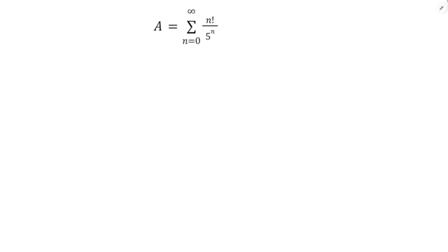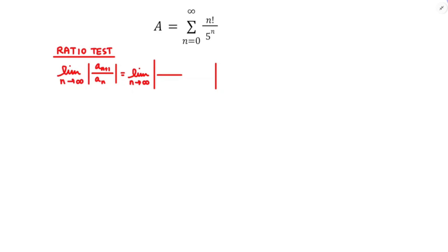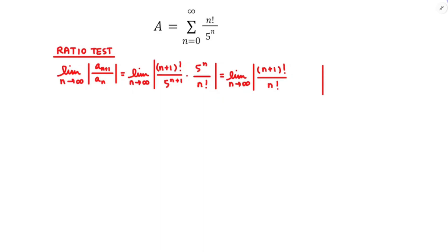Alright, so with example A, we're running the ratio test, which means considering the limit as n approaches infinity of the absolute value of the ratio of a n plus 1 to a n. Term n plus 1 is where I plug in n plus 1 wherever I see n in the original formula, so I'm going to have n plus 1 factorial and a 5 to the n plus 1. Then I divide by the terms of the original — just multiplying by the reciprocal — so multiplying by 5 to the n over n factorial. To make this easier, I'll change the order: put the factorials together as n plus 1 factorial over n factorial, multiplied by 5 to the n over 5 to the n plus 1.